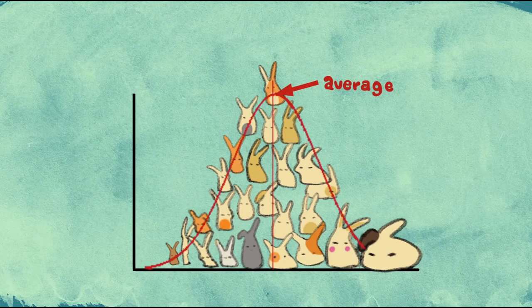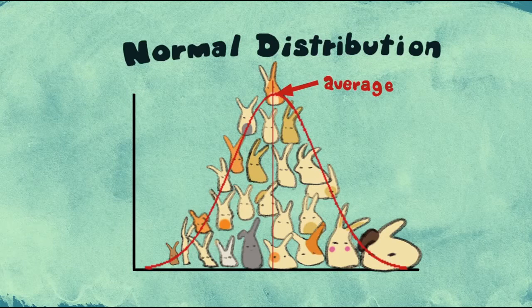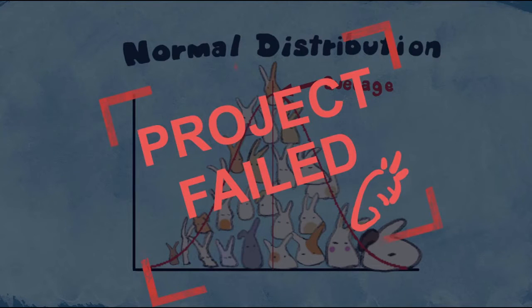This particular bell-shaped curve is called a normal distribution. Sadly, he has to give up his experiment as it will cost him a fortune in carrots. So, he changes the plan.